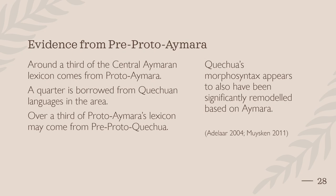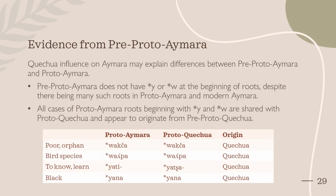There is also influence in the other direction, with Quechua's morphosyntax appearing to have been significantly remodelled based on Aymara. The influence of Quechua on Aymara may explain some differences between pre-proto-Aymara and proto-Aymara. More differences can be seen in terms of consonants: pre-proto-Aymara does not have Y or W at the beginning of roots, despite there being many such roots in proto-Aymara and modern Aymara. This can be attributed to borrowing from Quechua, as all cases of proto-Aymaran roots beginning with Y and W are shared with proto-Quechua and appear to originate from pre-proto-Quechua, as seen below.